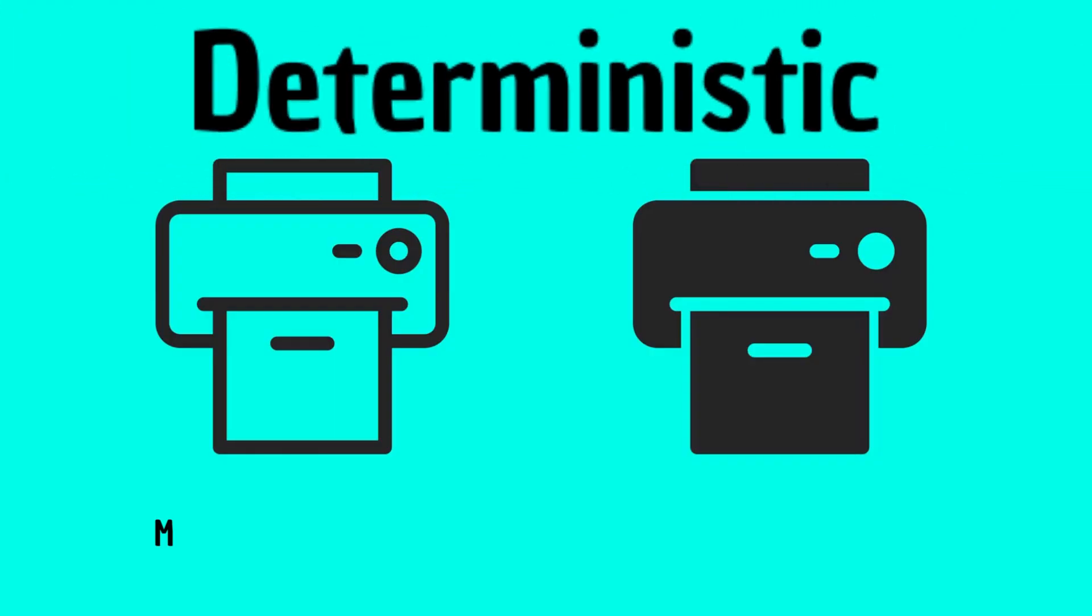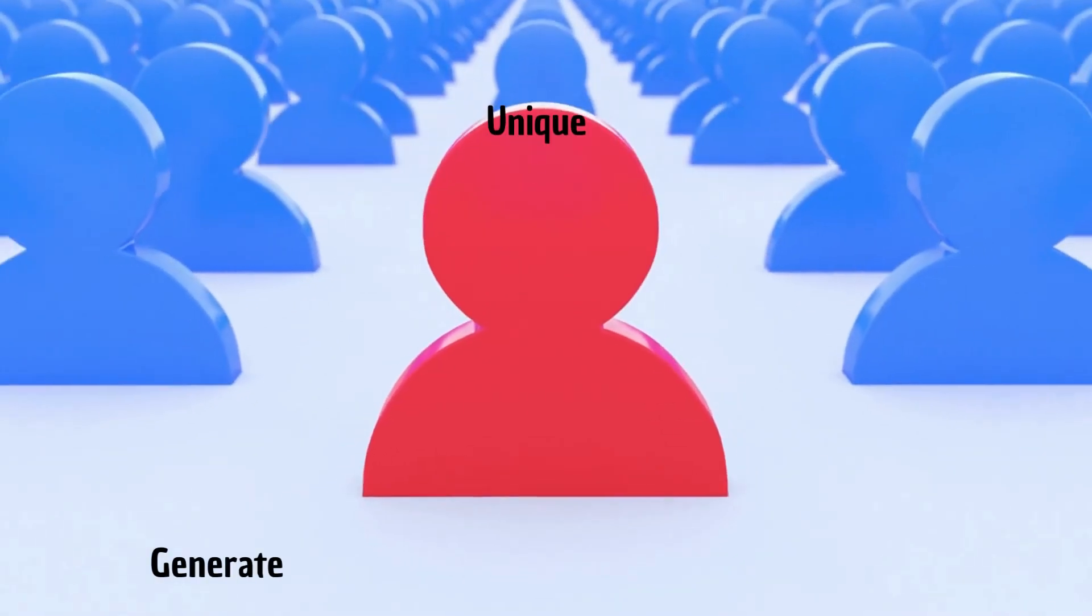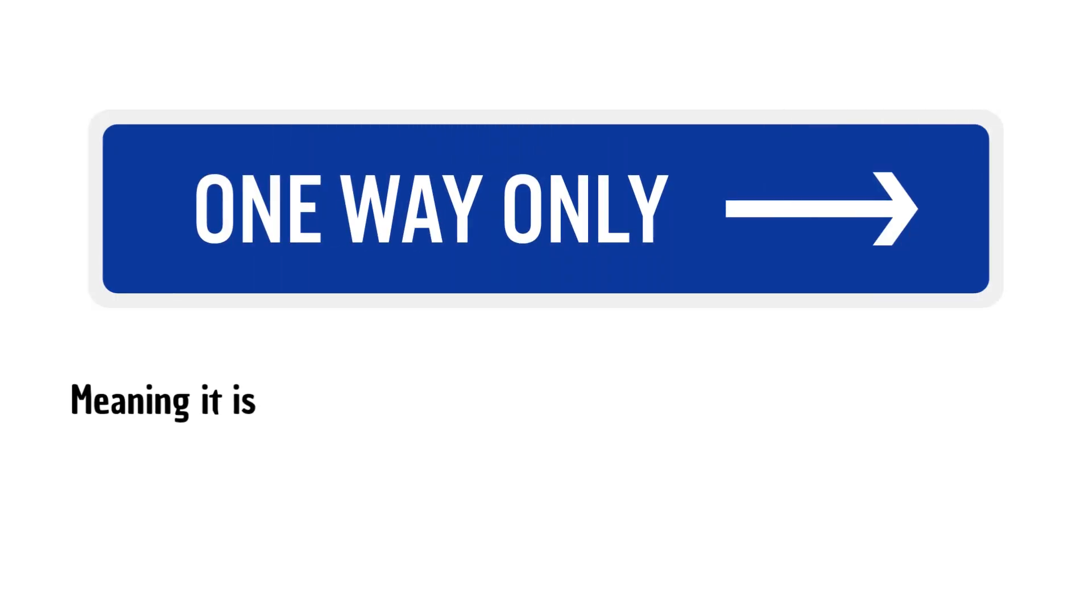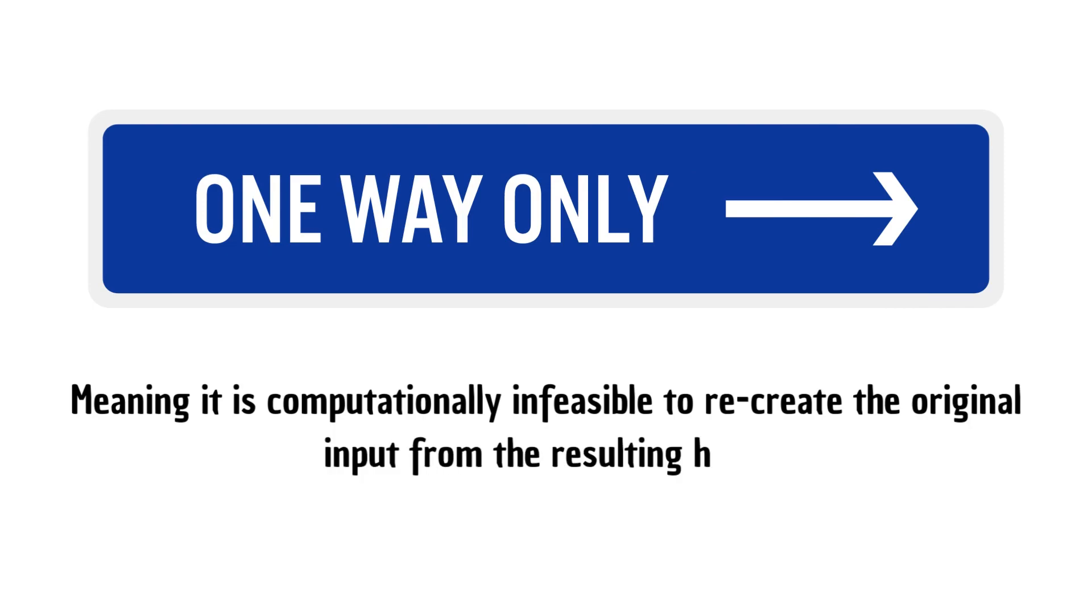These include deterministic, means the same input will always produce the same output. Unique, generate unique hash values for each individual input. One way, meaning it is computationally infeasible to recreate the original input from the resulting hash.